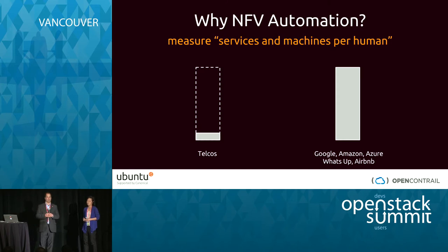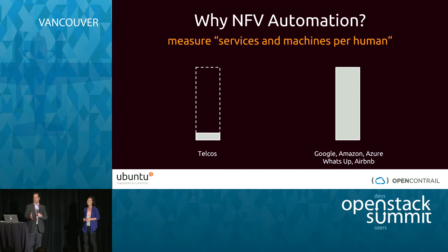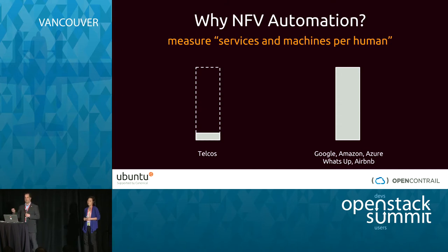Carriers are being driven by a market reality that puts them in competition with companies they haven't competed with in the past — Google, Facebook. It's clear that Google has aspirations to be a service provider in some shape or form. The challenge for the telcos is they compete in a market where Google, Amazon, Airbnb, and WhatsApp can deploy thousands of machines with an individual administrator, because they do lots of automation and simplification, while telcos are trying to get there.